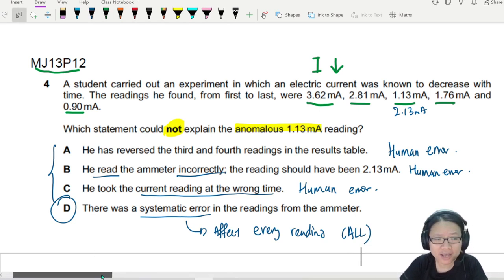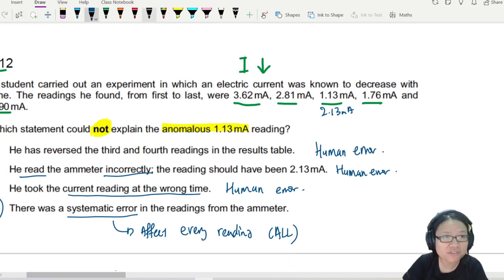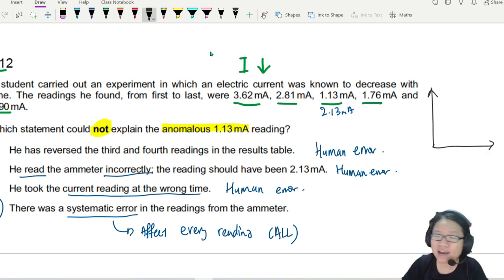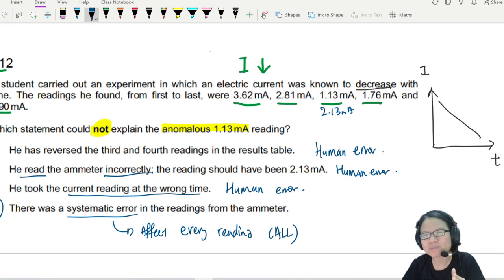Let me show you how this could look like. If I draw a graph to show you how different the two errors can look. Let's say I have a graph of current against time. They say current decreases with time, so maybe like this. This is my true value, the line is my true value.